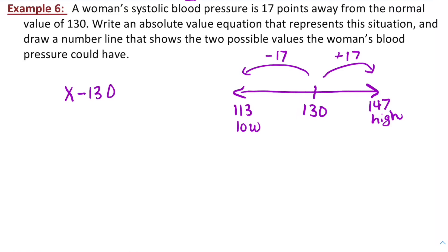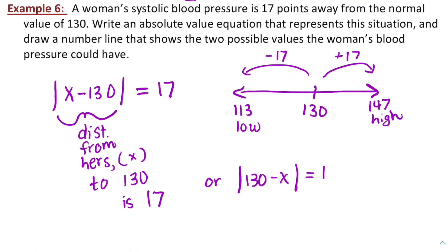Equation-wise, we're talking about the distance between her mystery blood pressure, X, and 130. So that distance is equal to 17 units. So I could write the absolute value equation, X minus 130 equals 17. If you think about how you get the distance between two things, you subtract them. So if I take her blood pressure, X minus 130, that distance is 17 units. And the absolute value represents the fact that I could go 17 units in the positive direction or 17 units in the negative direction.